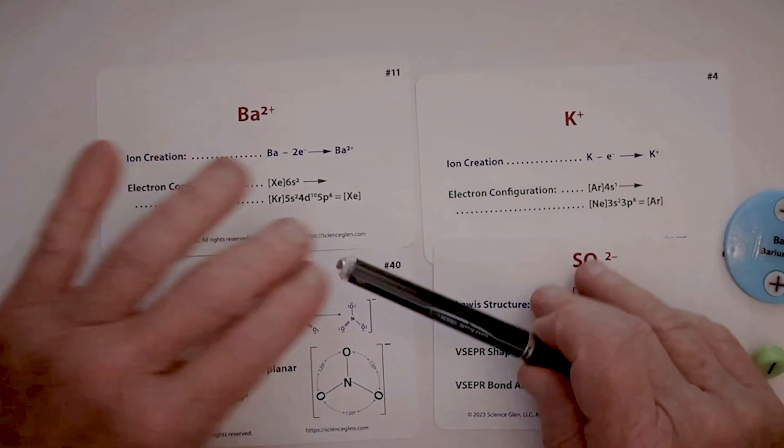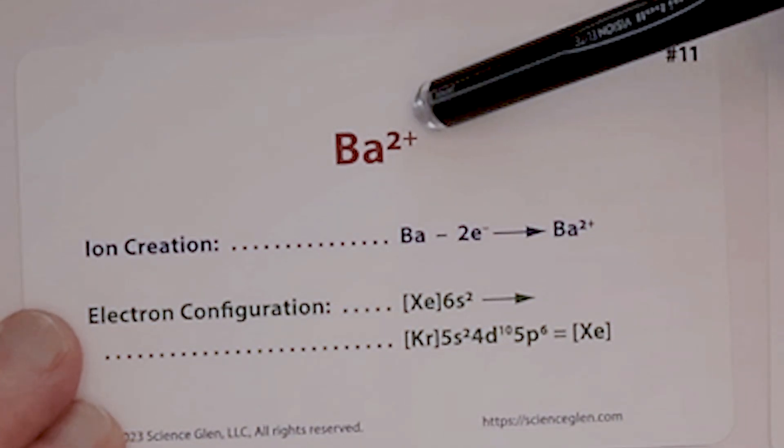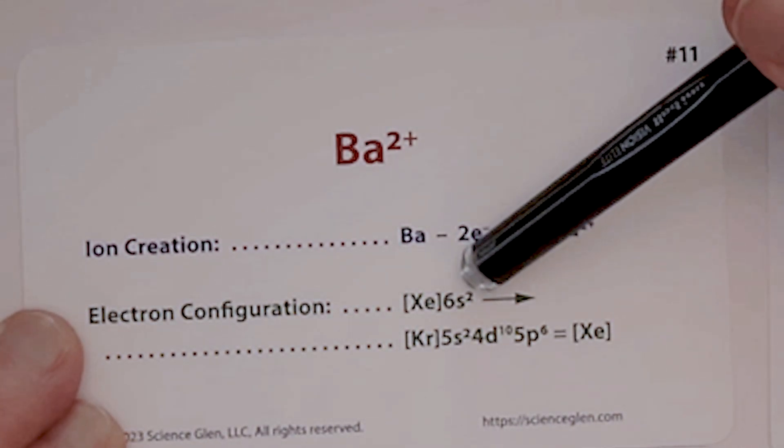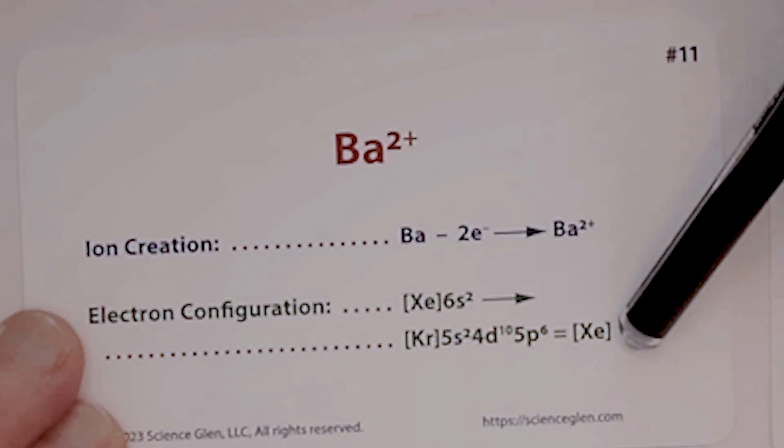So if we start off with barium, barium is going to lose two electrons from the 6s orbital. You get a charge of plus two. It ends up being like xenon.